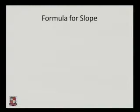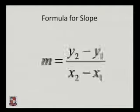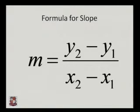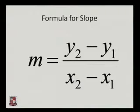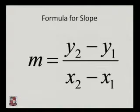This is the formula for the slope, which we have already discussed. M is the slope of the given line, and we can evaluate it as y2 minus y1 upon x2 minus x1.